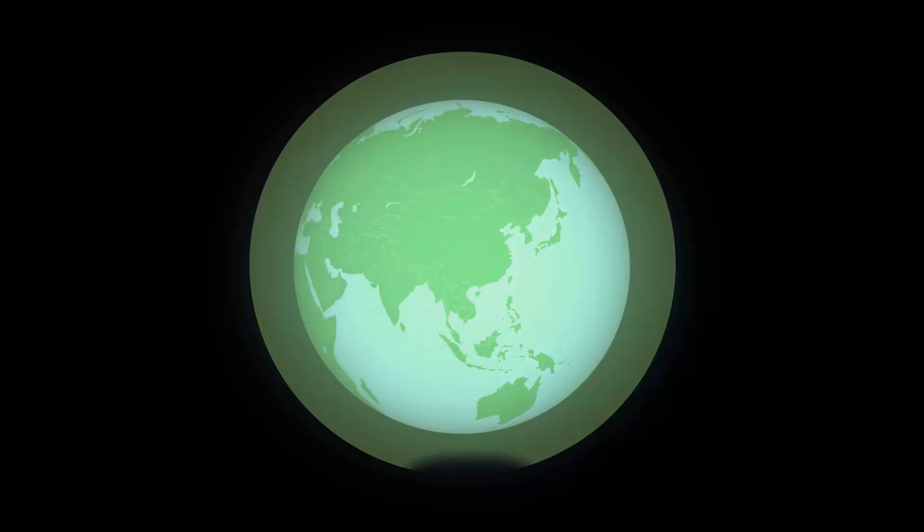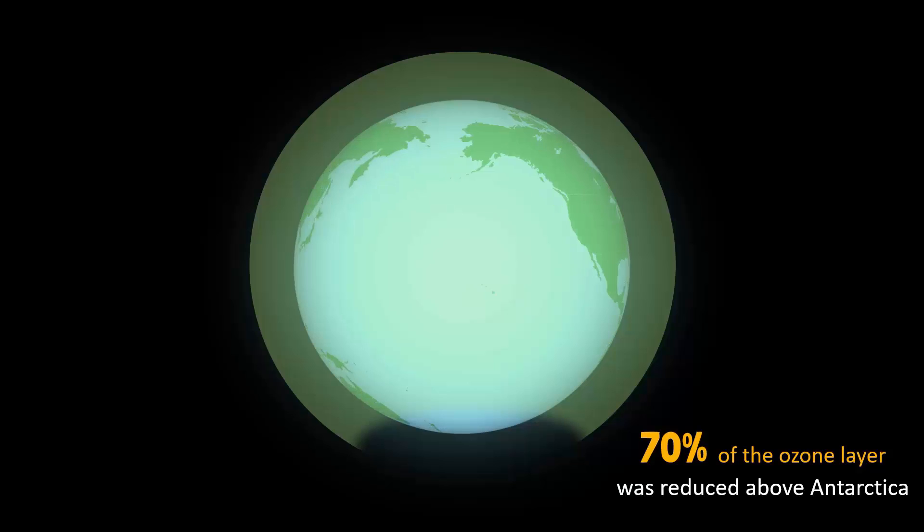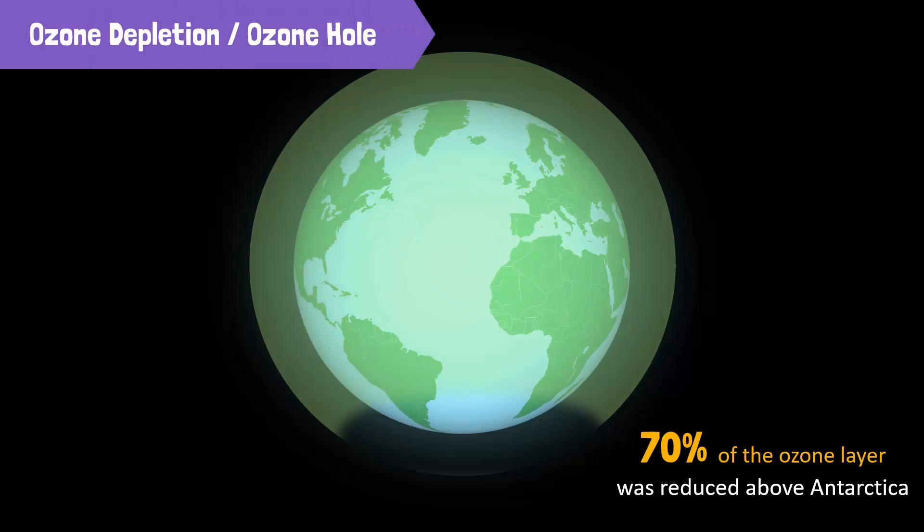But due to human activities, this protective layer is in danger. In the 1980s, scientists discovered that the amount of ozone gas in the Earth's atmosphere had decreased. It was also reported that 70% of the ozone layer was reduced above Antarctica. This reduction of the ozone layer was referred to as ozone depletion or the ozone hole.